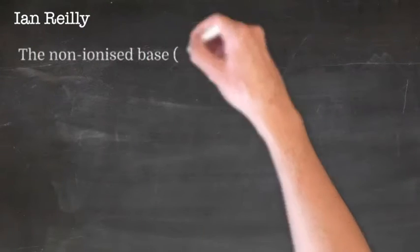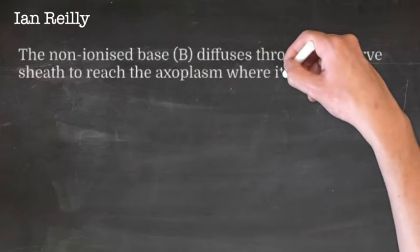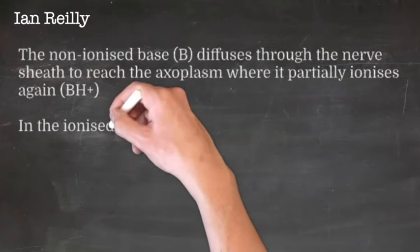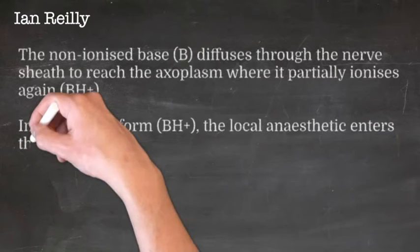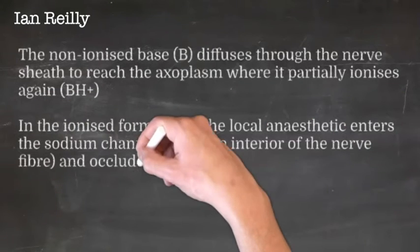The free base, which is non-polar, diffuses across the nerve sheath into the axoplasm, re-ionizes, and then blocks the inside of the sodium channel. Okay, I'll do that now with a picture.